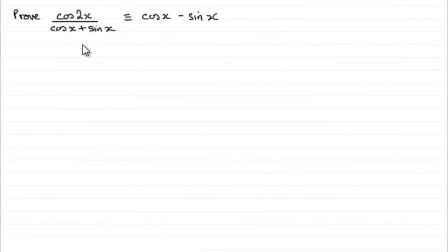In the first part of this question, we've got to prove this identity: cos2x over cosx plus sinx is identical to cosx minus sinx. Before I start, I would want to choose which of the two sides I would go for.